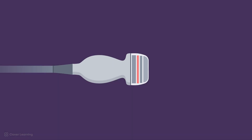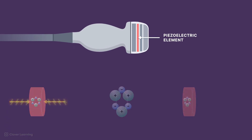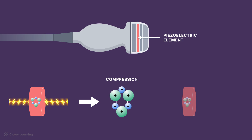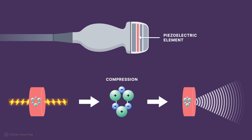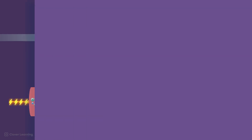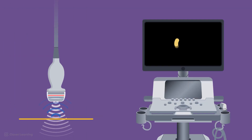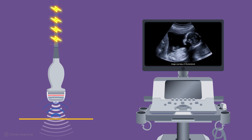The transducer crystal has piezoelectric properties and is the most critical component of an ultrasound transducer. Piezoelectric properties means that when electrical energy hits the crystal, it expands and contracts in thickness, which causes compression and produces sound waves that travel into the body. When echoes return, the crystal vibrates again, converting those sound waves back into electrical signals that create an image.